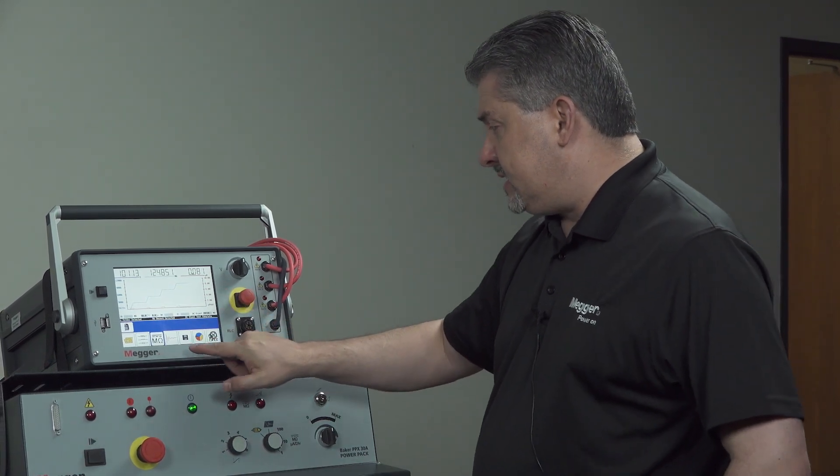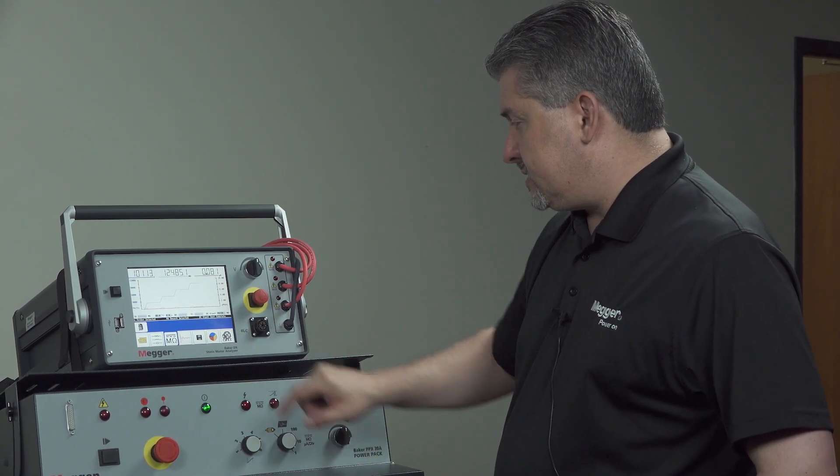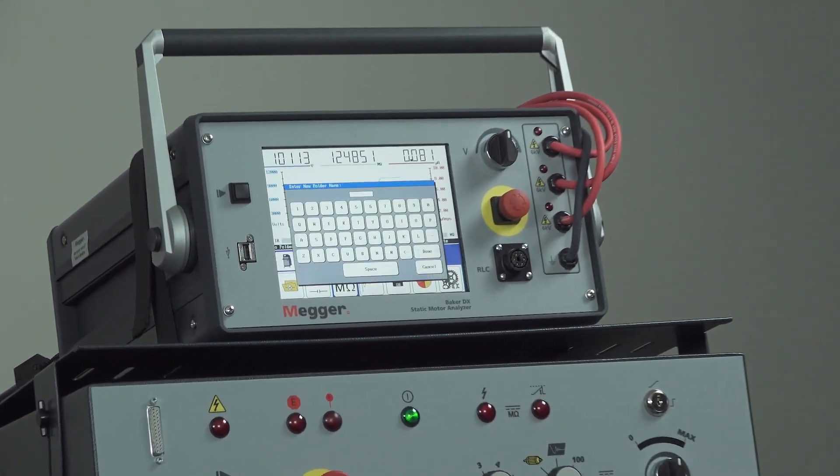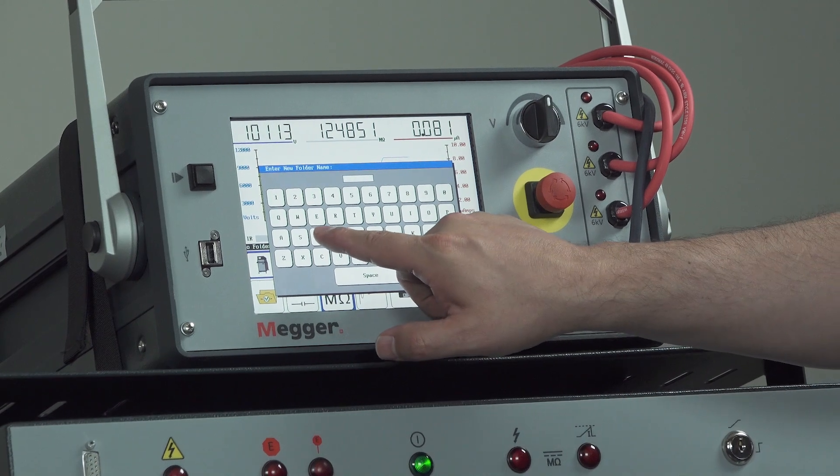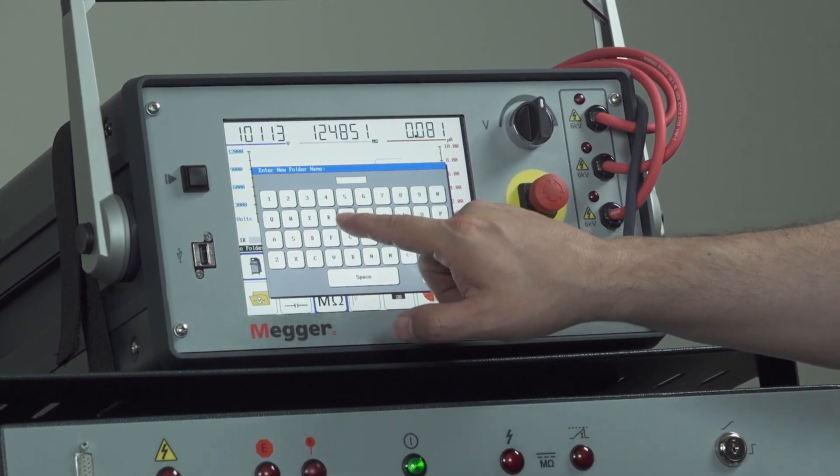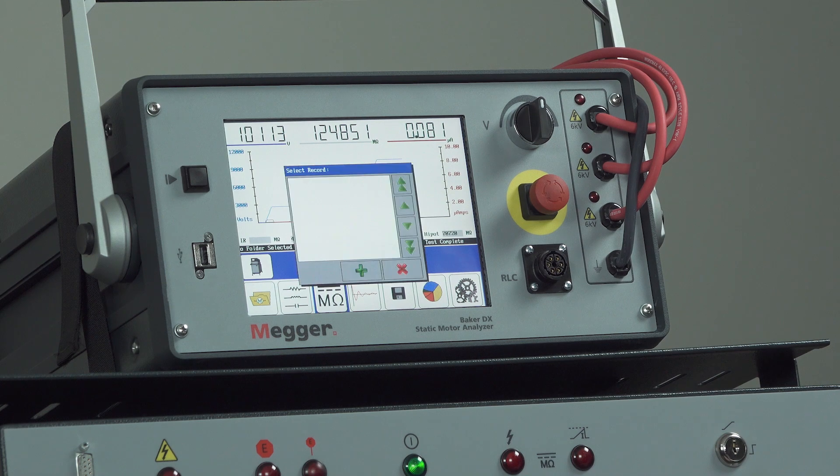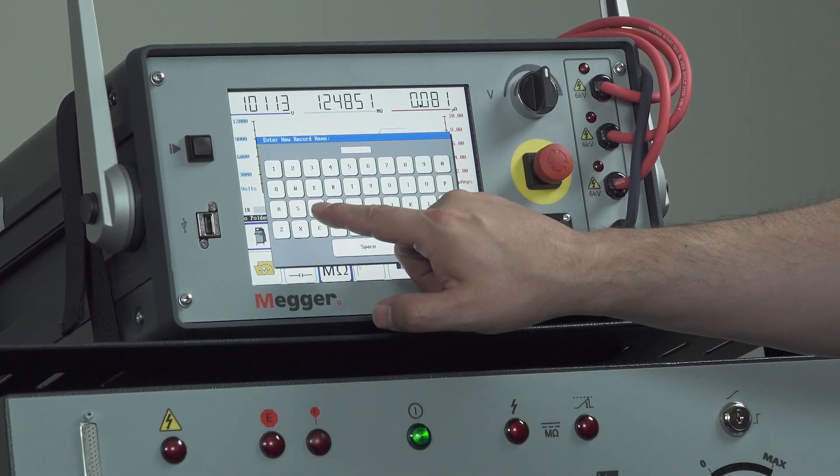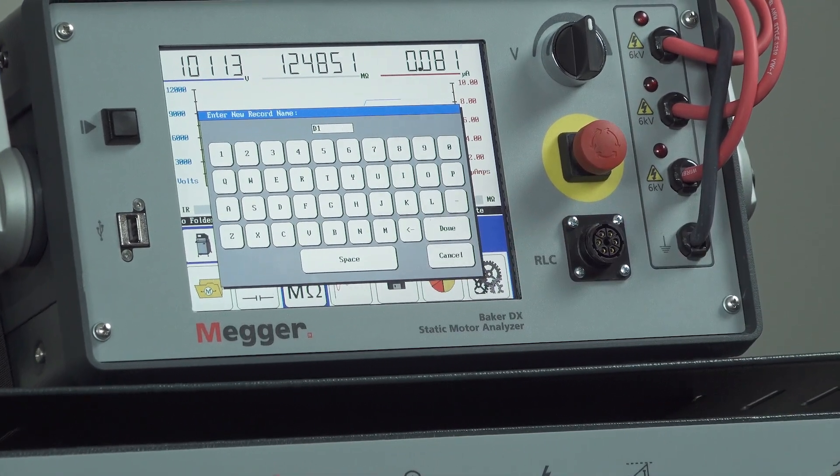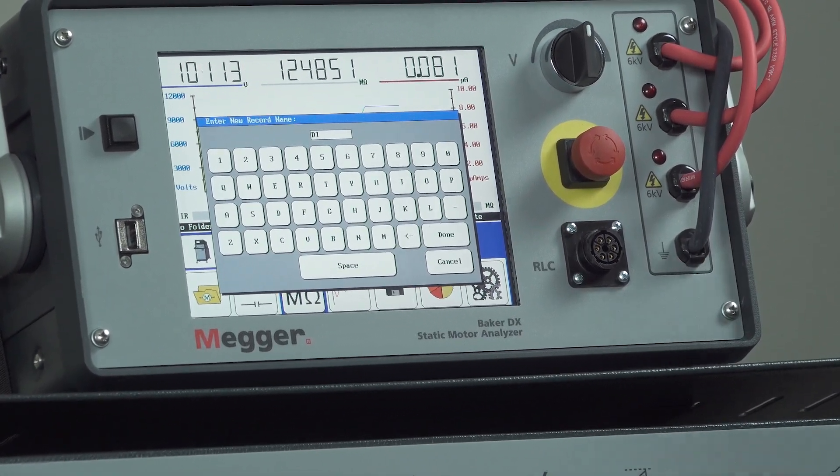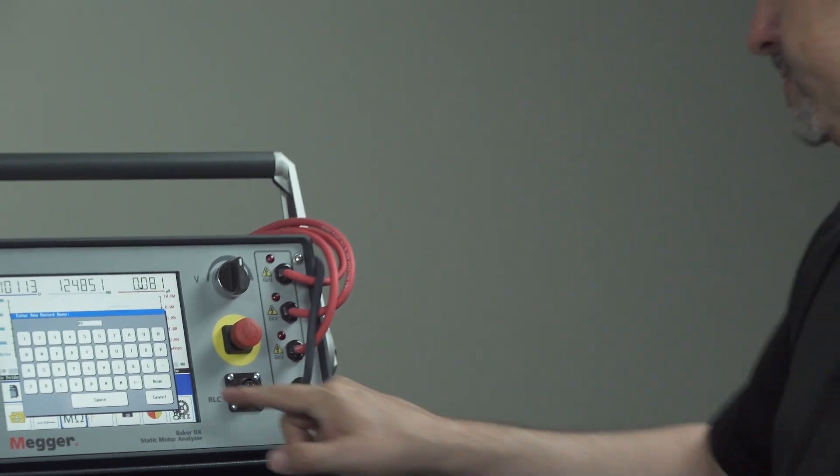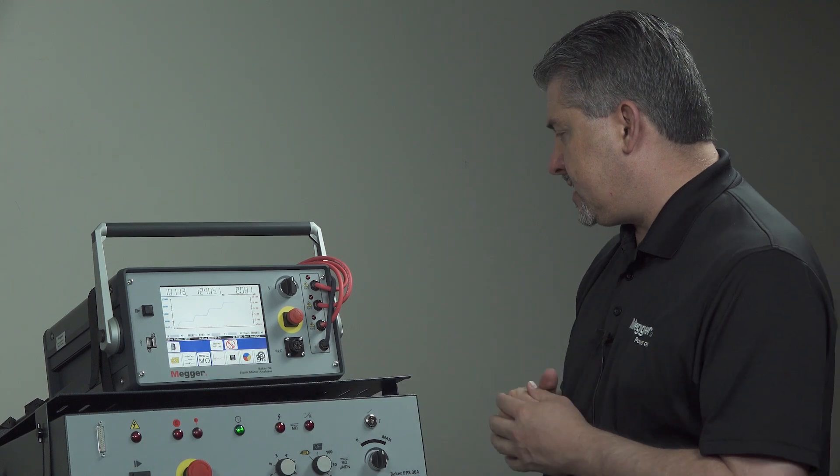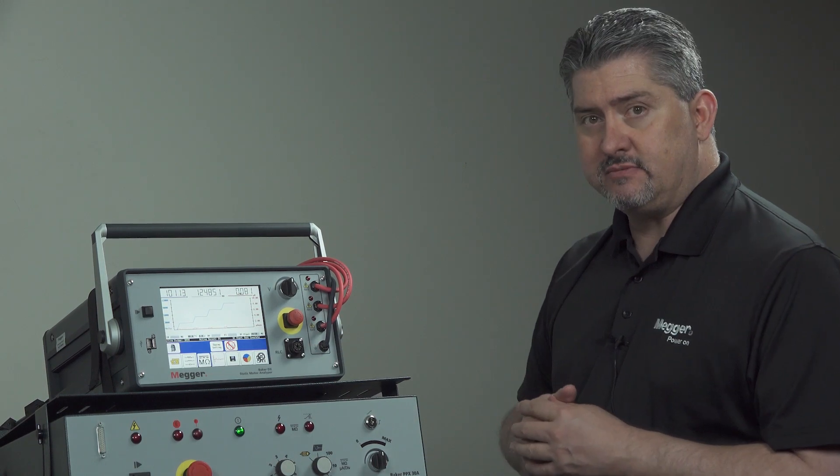Now remember that we want to save that data. So we want to click the save icon. Then select the proper folder. If you don't have a folder, create one. And again, select the proper record. If you don't have a record, create one. For more detailed explanation on creating folders and records, I'll refer you back to the DX operational video. Once the data is saved, we're all done. We're ready to move on to additional testing.